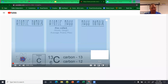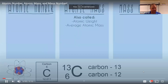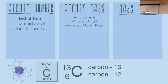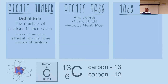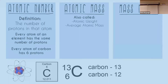In this video we'll go over atomic number, atomic mass, and mass number — their definitions, where you'll typically see them in chemistry class, and general facts. The atomic number is simply the number of protons in that atom. Every single atom of an element has the same number of protons. For example, every atom of carbon has six protons — that's carbon's atomic number.